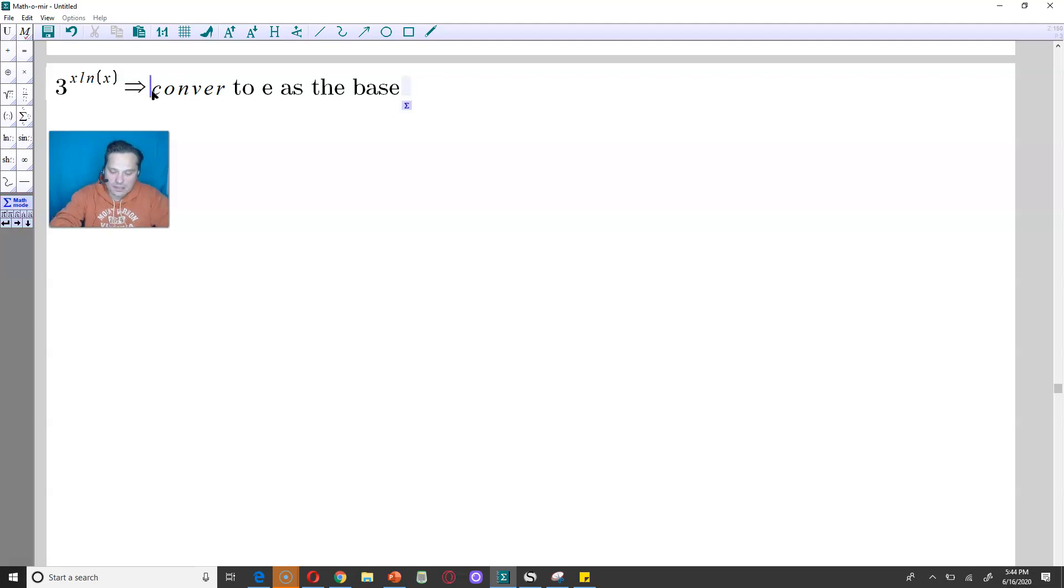So the way to do this is use this basic trick. 3 is equivalent to writing e to the ln of 3. The reason is that the e and ln functions are inverses, so whatever ln does, e reverses. In other words, 3 can literally be written as e to the ln of 3.